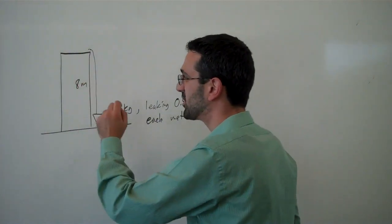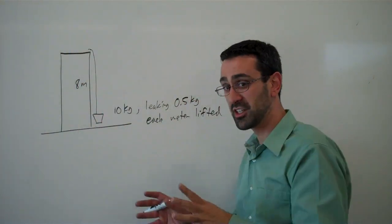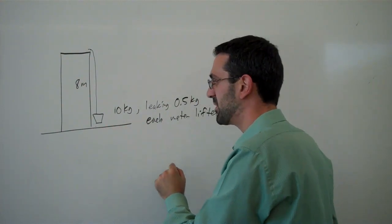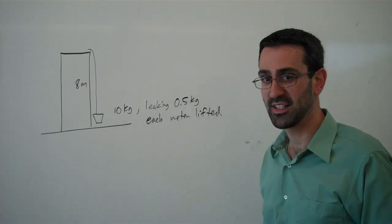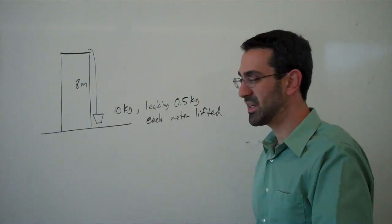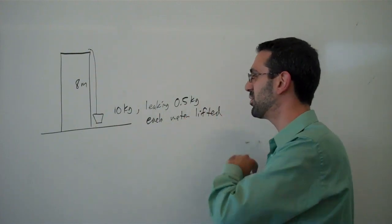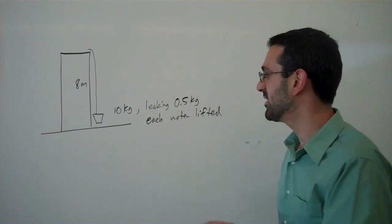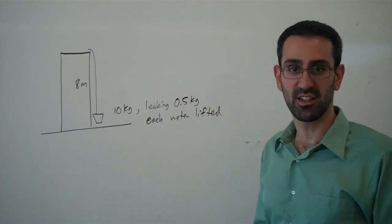We have an 8 meter tall building. We have a rope of negligible weight. We're not going to worry about the weight of the rope in this problem. But we have a bucket at the bottom, which starts out at 10 kilograms, but it's got a hole in it, and it's leaking 0.5 kilograms of sand or whatever it's carrying for each meter that it gets lifted.